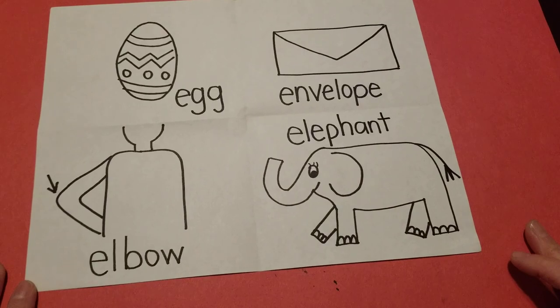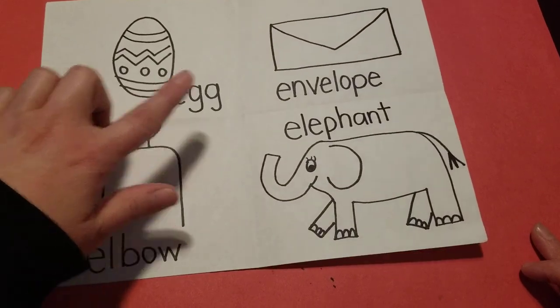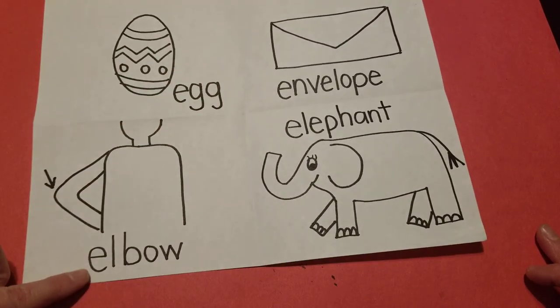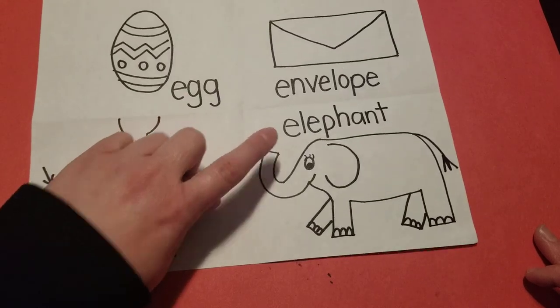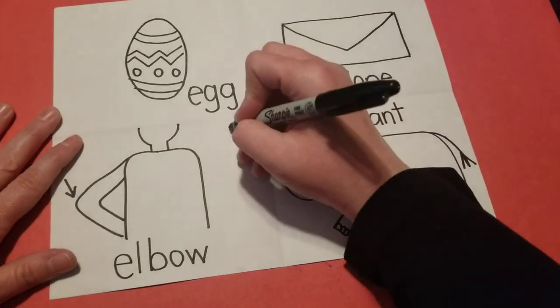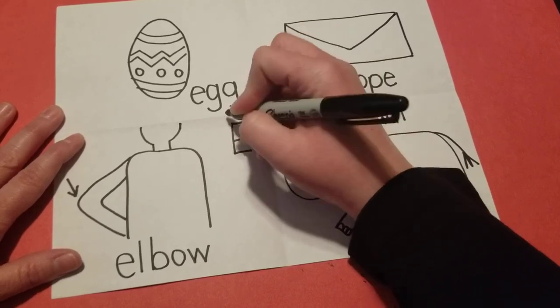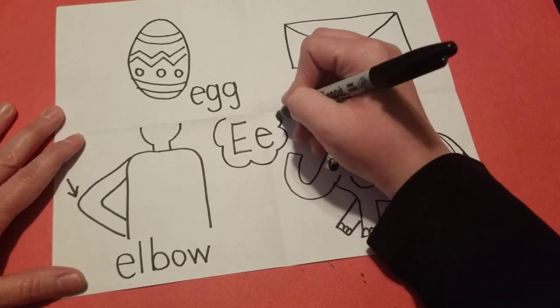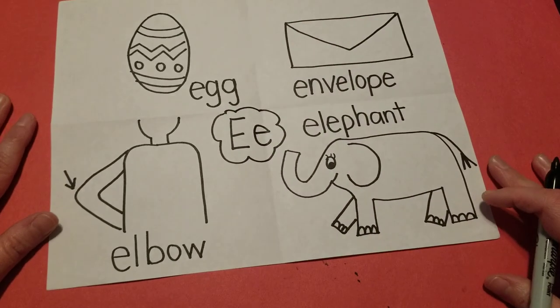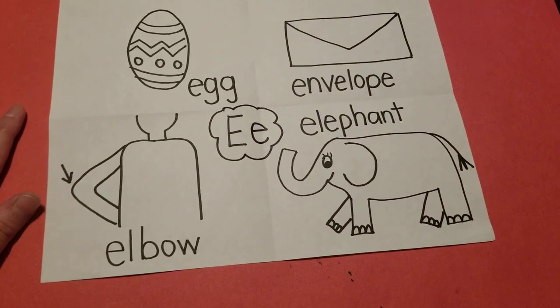And there we go. You just drew an egg, envelope, elbow, and elephant, that all start with that letter E. Good job. Keep practicing. Bye. Good job.